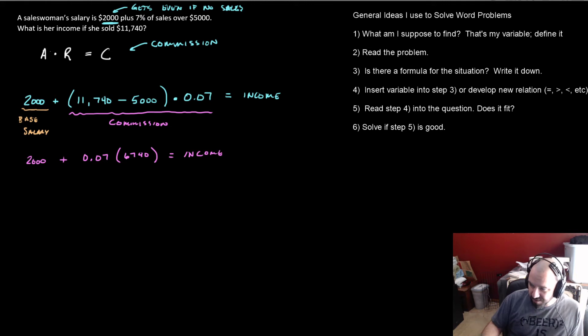So now we need to find what is 7% of that. So we multiply that by 0.07. That gives us $471.8. So here we got $2,000 plus $471.80. And then we just simply add those two things together. And that's going to give us $2,471.80. That was her total income for whatever period of time that was. And that's it. That's how you do it.